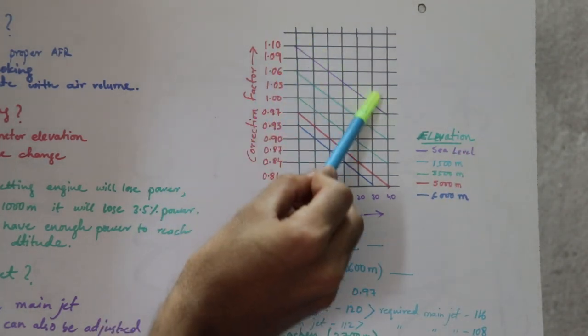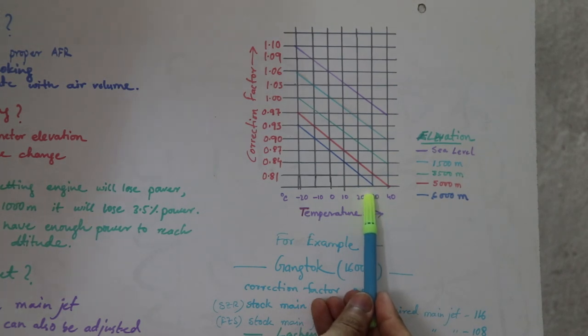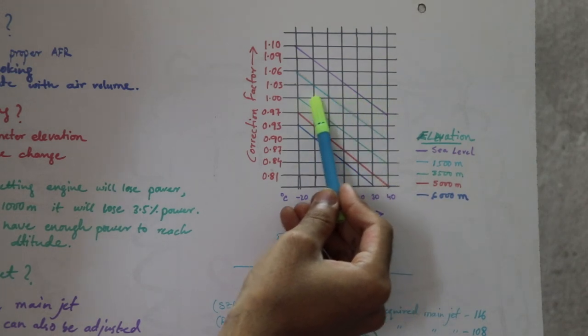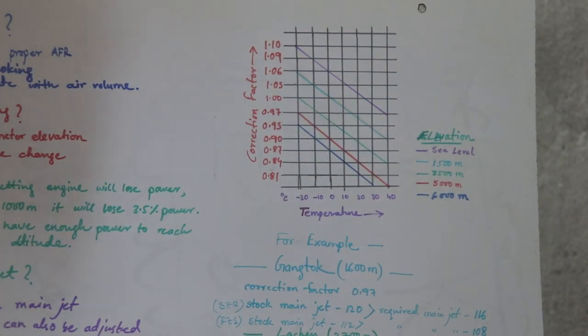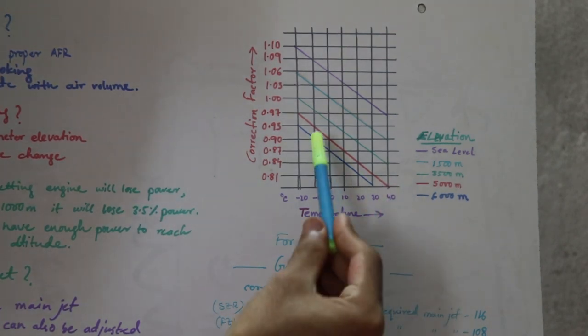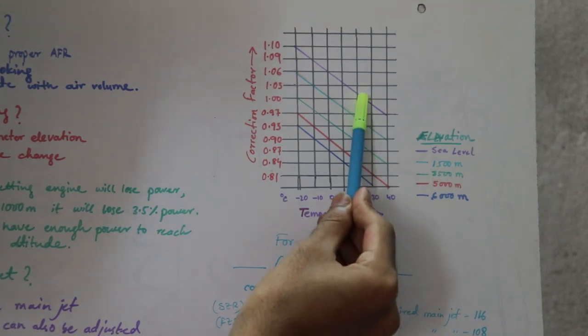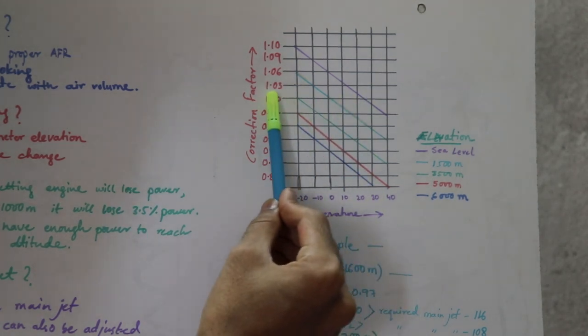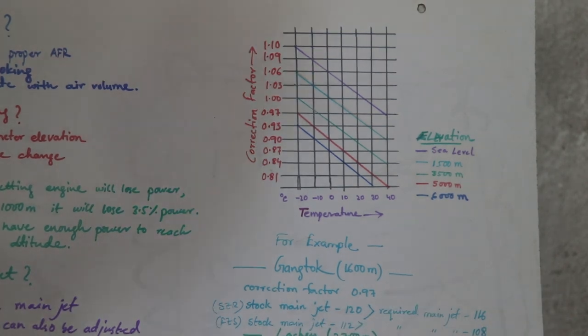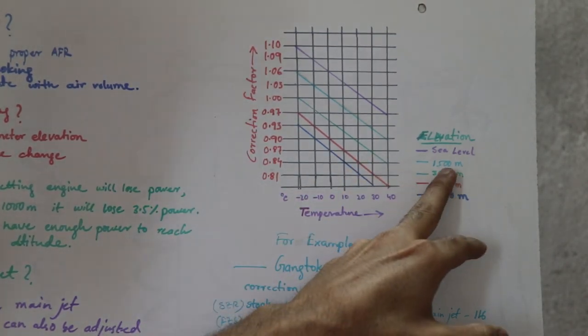Then we will consider the elevation. Here you can see different elevation levels I have plotted with these lines indicating different heights of elevation levels. So now we will be considering the sea level. This line you can see here is the sea level line and it is calibrated between 25 to 30 degrees centigrade. Here it intersects at this point and this is number one. One correction factor means it is the stock settings of our bike. If you have say 100 main jet, multiply it with correction factor.